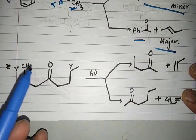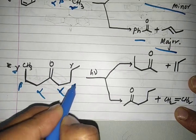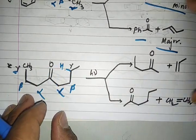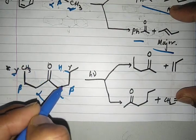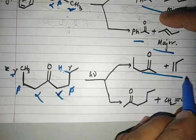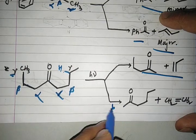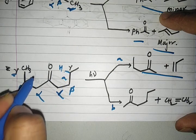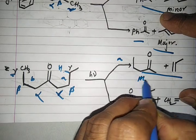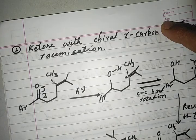For example, with alpha, beta, and gamma carbons identified — where the gamma carbon is more substituted — hydrogen migration occurs from the more substituted gamma position through the six-membered transition state, with cleavage of the alpha–beta bond giving the major product. The other pathway, involving cleavage from the less substituted side (path B), gives the minor product.